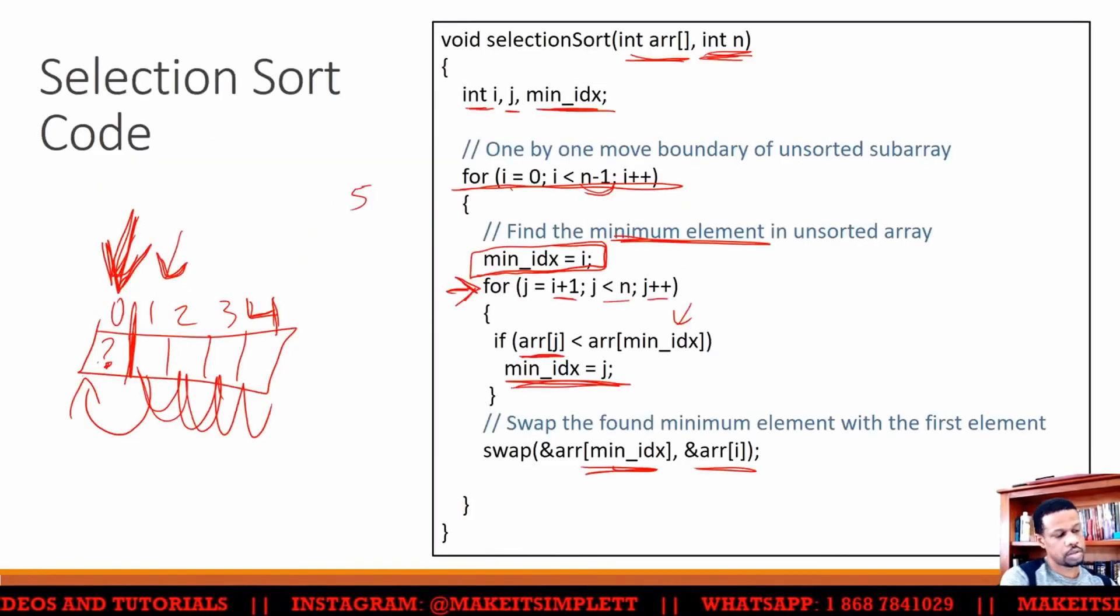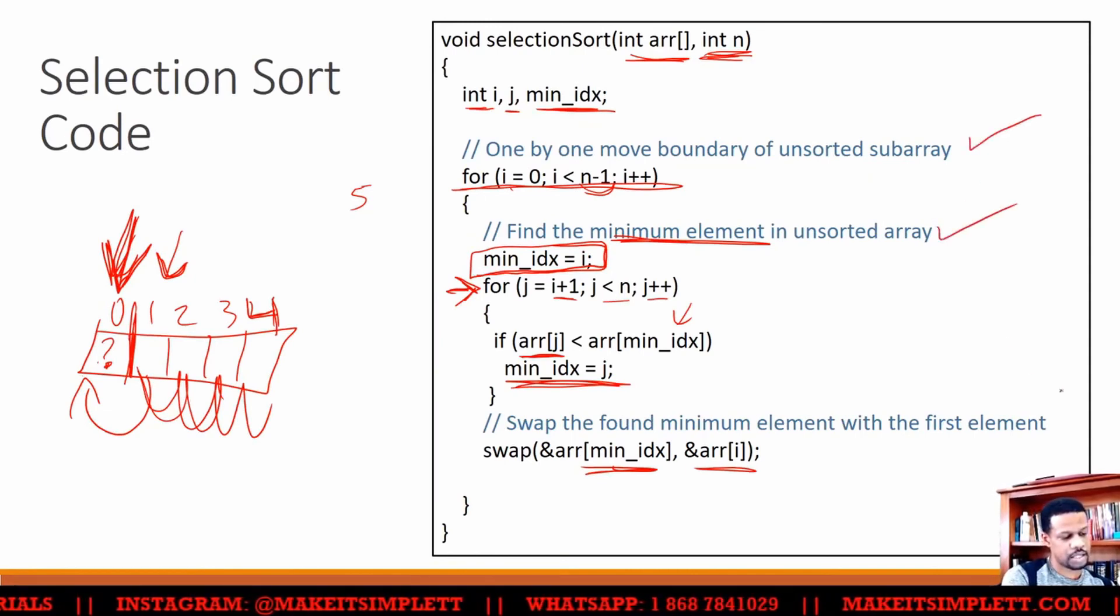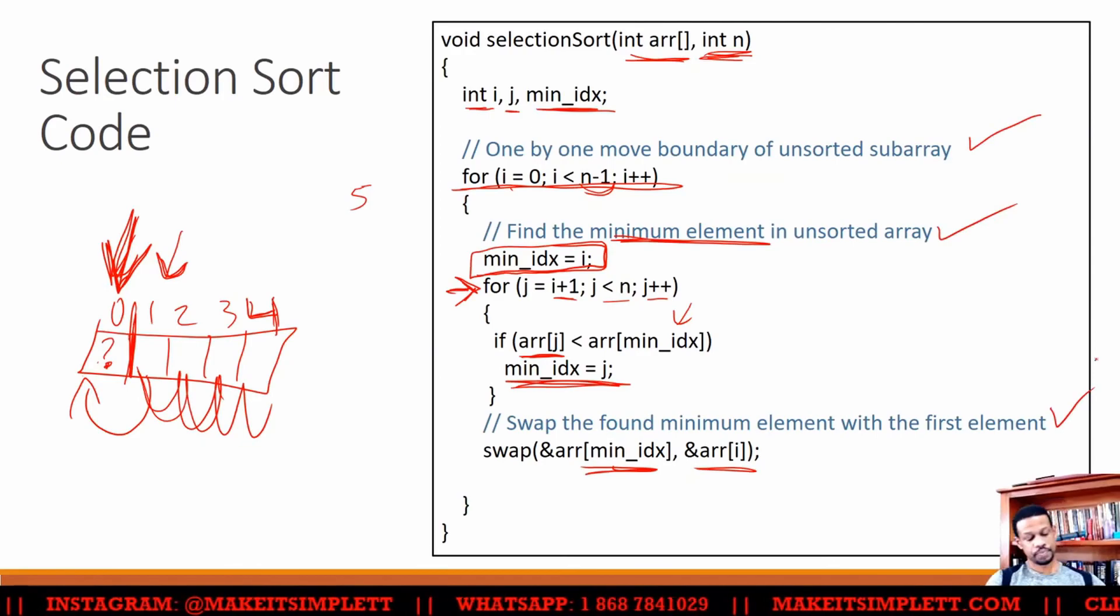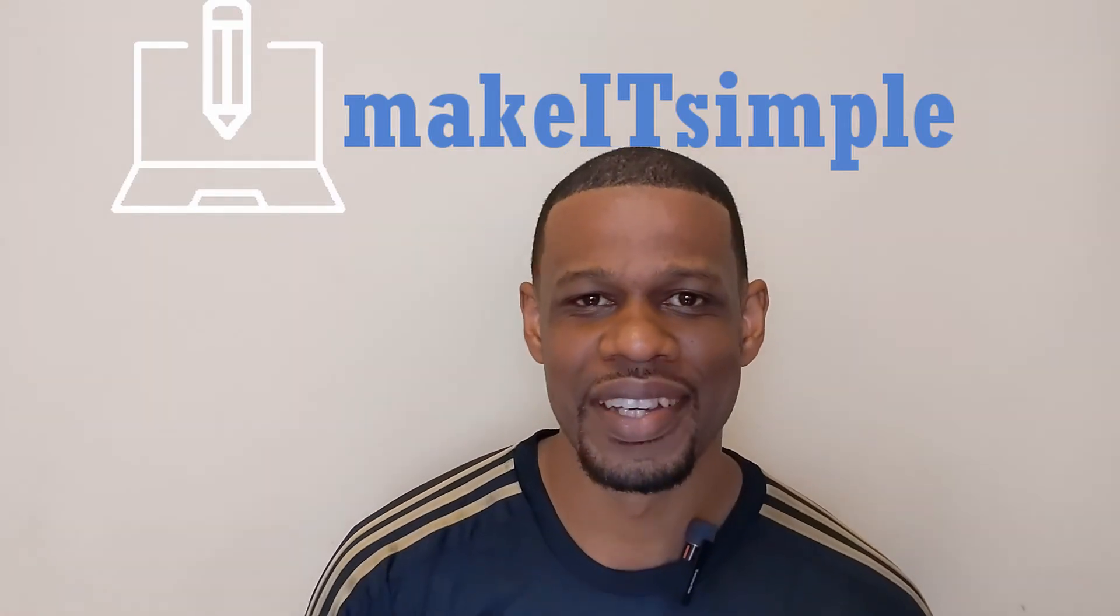So the explanation for Selection Sort is that you have one loop that does this, you take these comments, then that does that, then it swaps there basically. Thanks for watching the theory video. If you learned something...